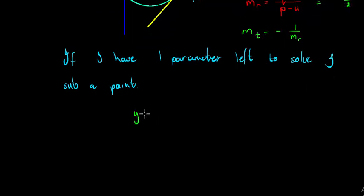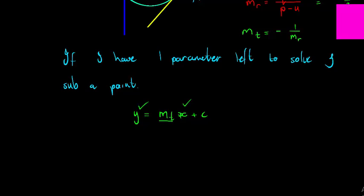So eventually to find c, I'll have y is equal to m_t times x plus c. I will temporarily substitute y and x, and so I'll have v is equal to m_t times u plus c. So in that way I will be able to find c_t.